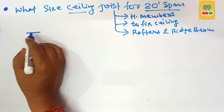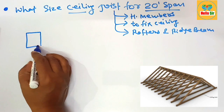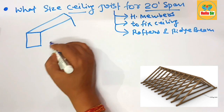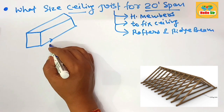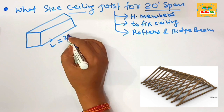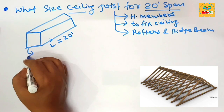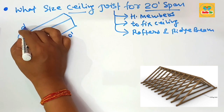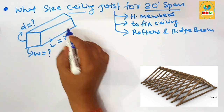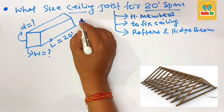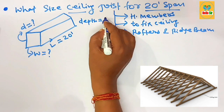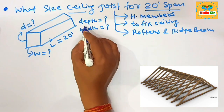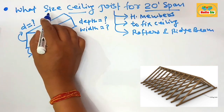Here we make a rough diagram to understand the different dimensions of the ceiling joist. The span length is 20 foot. The width section and depth section of the ceiling joist are what you need to calculate. The size of a ceiling joist means its depth and width section.